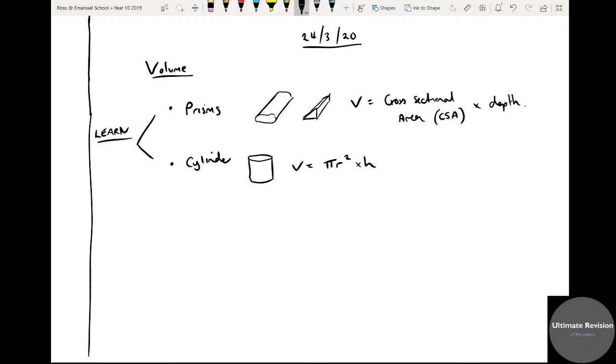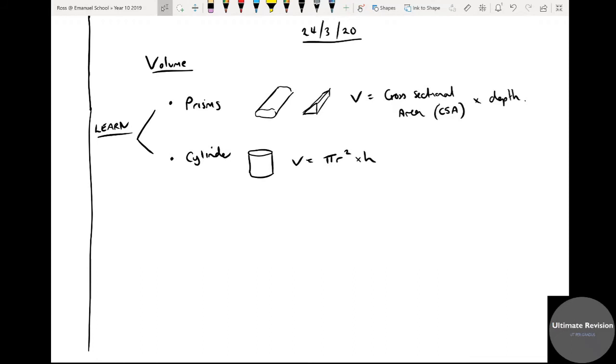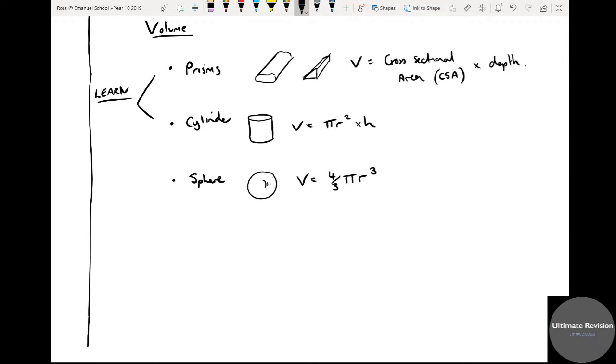Now there are some special shapes as well that we need to know. So we need to know how to work out the volume of a sphere, so a sphere often like a 3D circle like that, and the volume of a sphere is four-thirds pi r cubed. We'll be using that later. That's what the volume of a sphere is. We also need to know how to work out the volume of a pyramid, a pyramid which might be something like this. So a pyramid there, and a pyramid is a third of a cuboid. But you can always fit three pyramids into a cuboid, so therefore the volume is a third base times height. Okay, that's a pyramid.